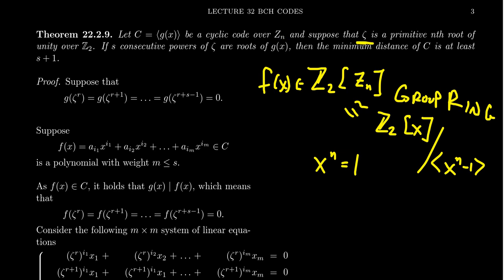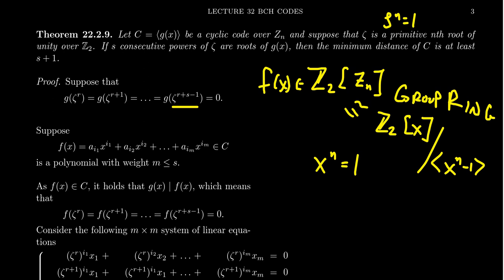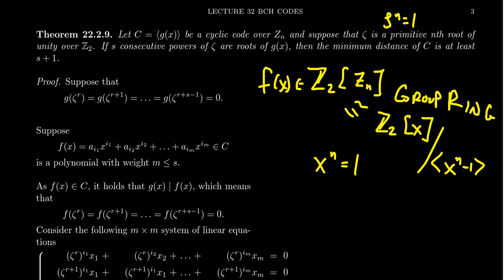Now consider a primitive nth root of unity ζ, where these N's are the same. So ζ^N = 1 — we have a primitive nth root of unity over Z_2. If S consecutive powers of ζ are roots of G(X), so G(ζ^R) = 0, G(ζ^{R+1}) = 0, G(ζ^{R+2}), G(ζ^{R+3}), and so on all the way down to G(ζ^{R+S−1}) — so we have S consecutive roots of unity starting with a primitive one — and these are all roots of our polynomial G(X).